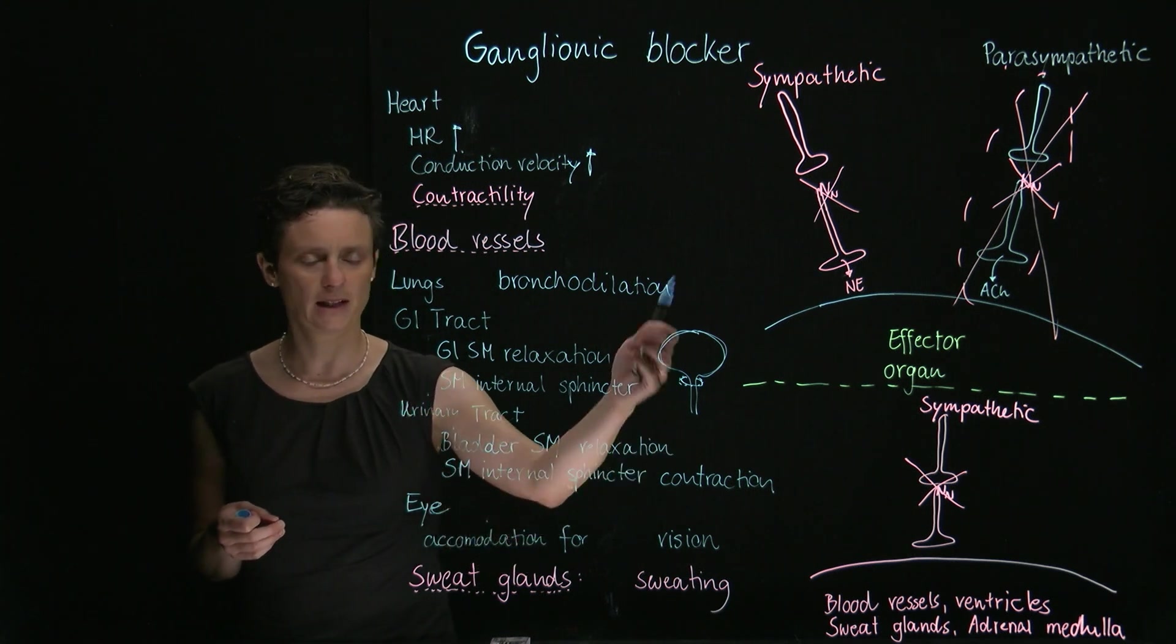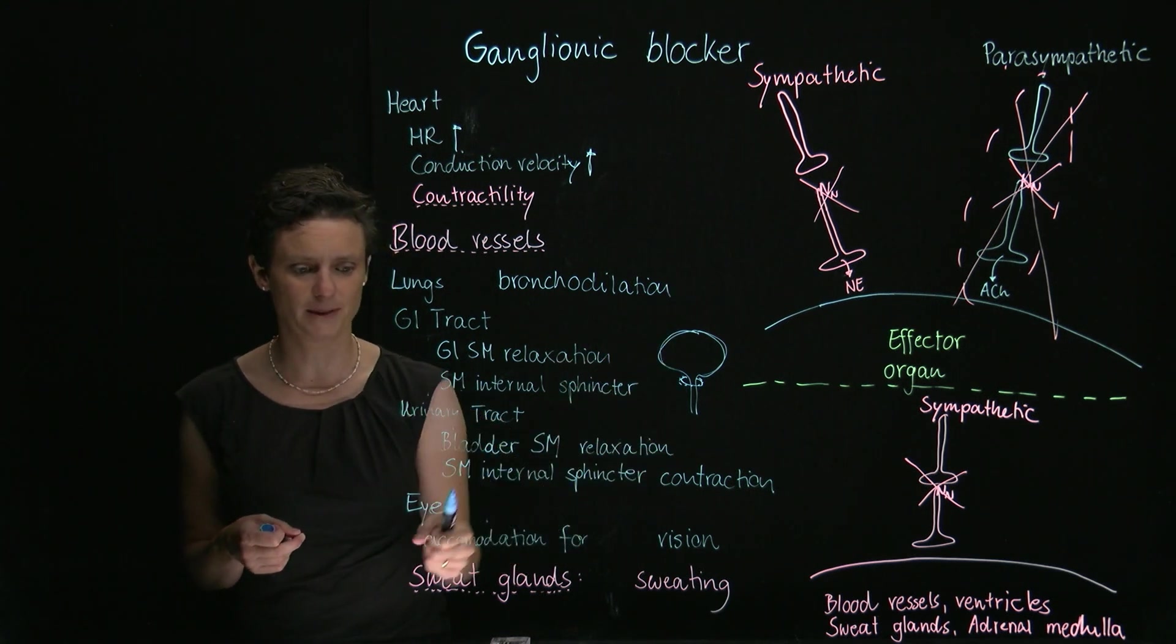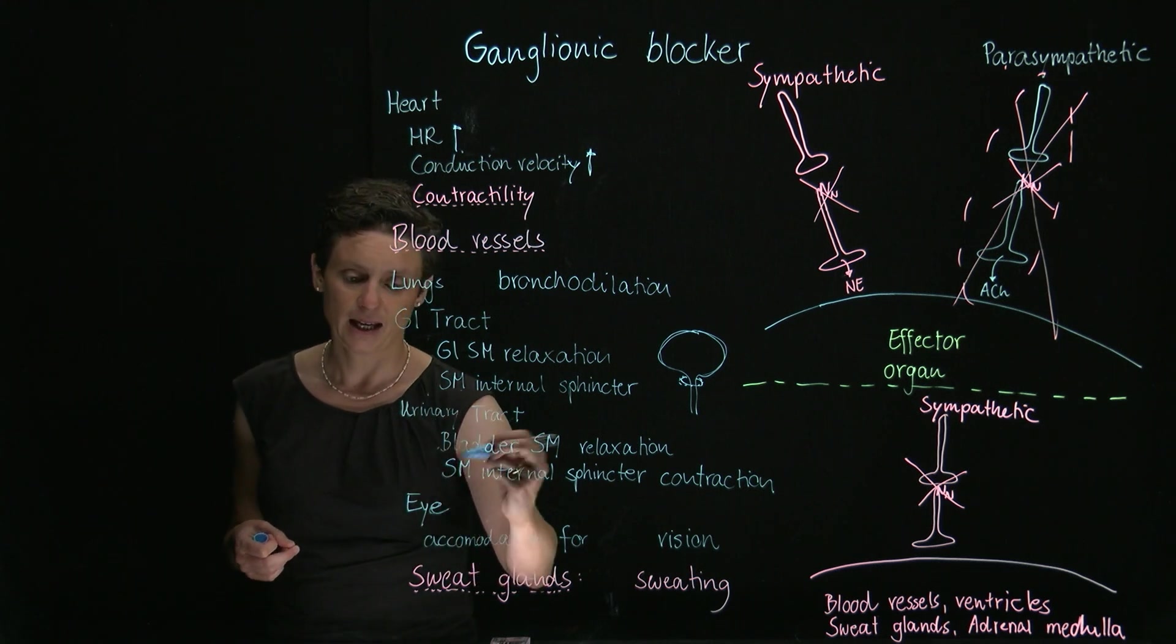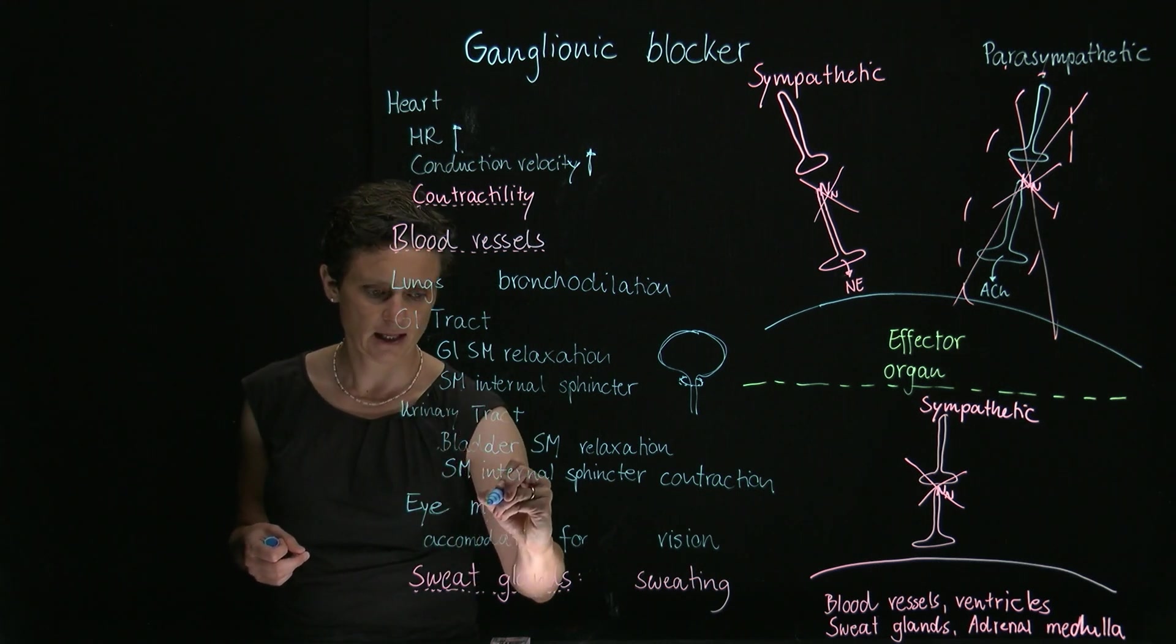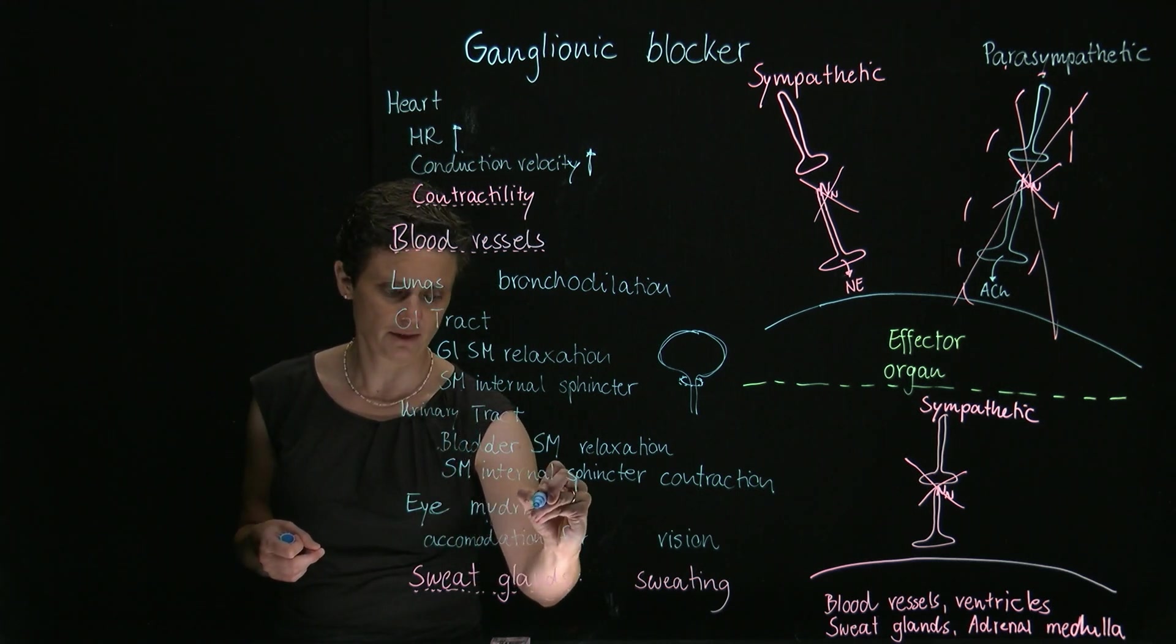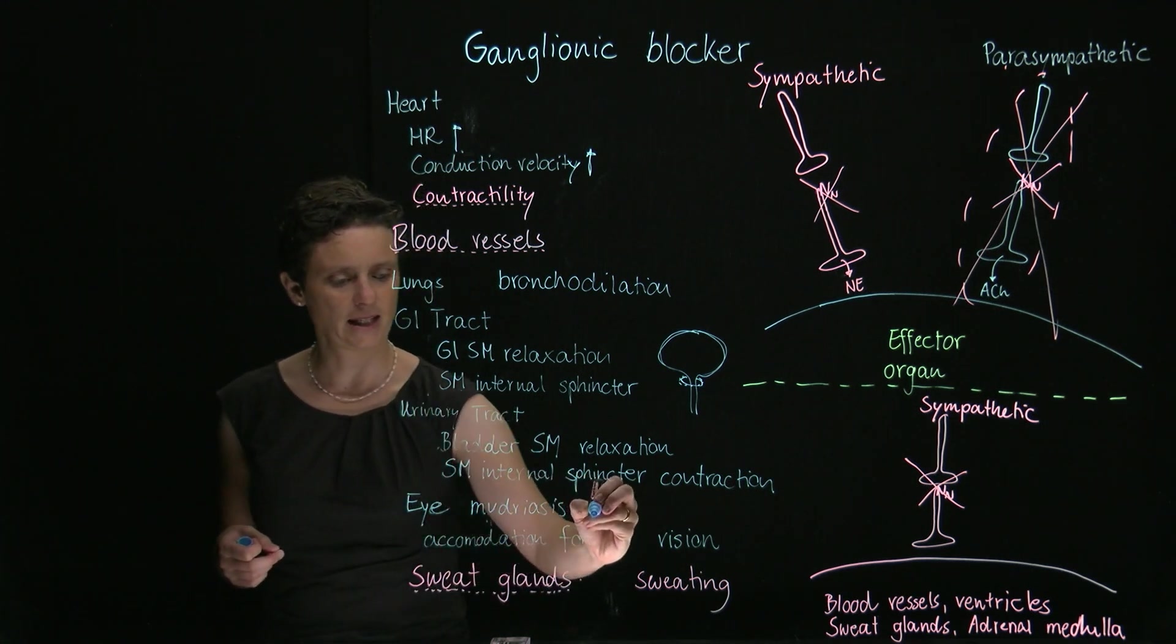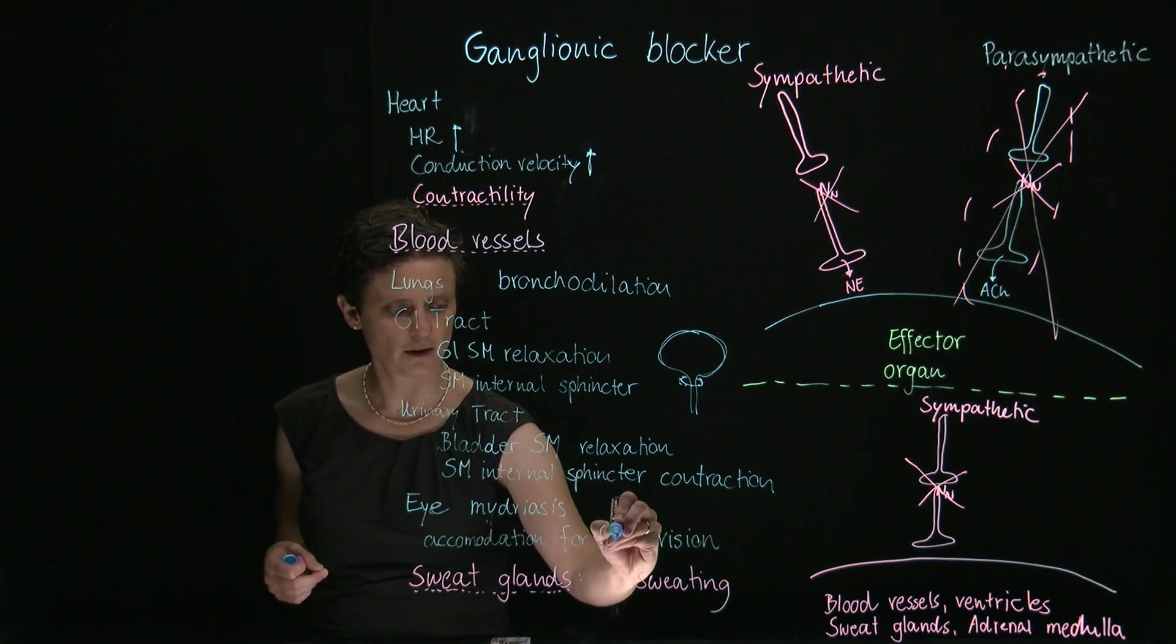The internal sphincter is under autonomic control, and this should be tight. The eye, sympathetic mediates mydriasis, the fancy term for pupillary dilation, and then accommodation for far vision.